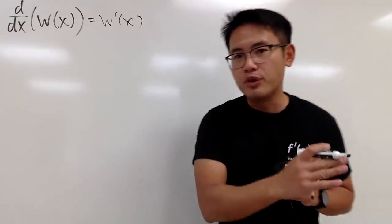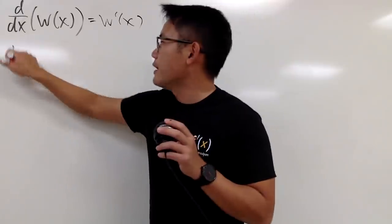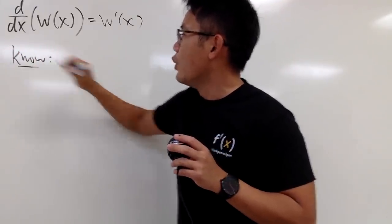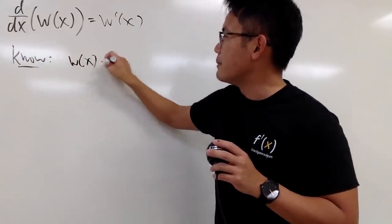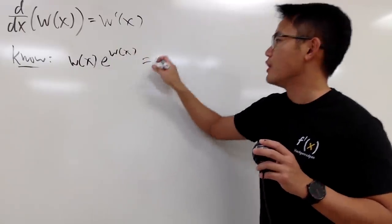But you have to make sure that you watch my previous video so you know all the identities that I mentioned so far. So first of all, I'm going to tell you guys that we know when we have W of x times e to the W of x right here, this will give us just x.